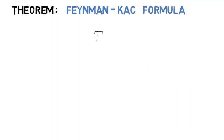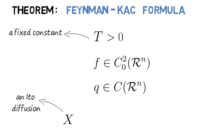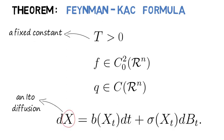Treat capital T to be a positive fixed constant. Let f be a continuous function and q also continuous. Let X be an Ito diffusion with the following SDE. We also assume that q is lower bounded.